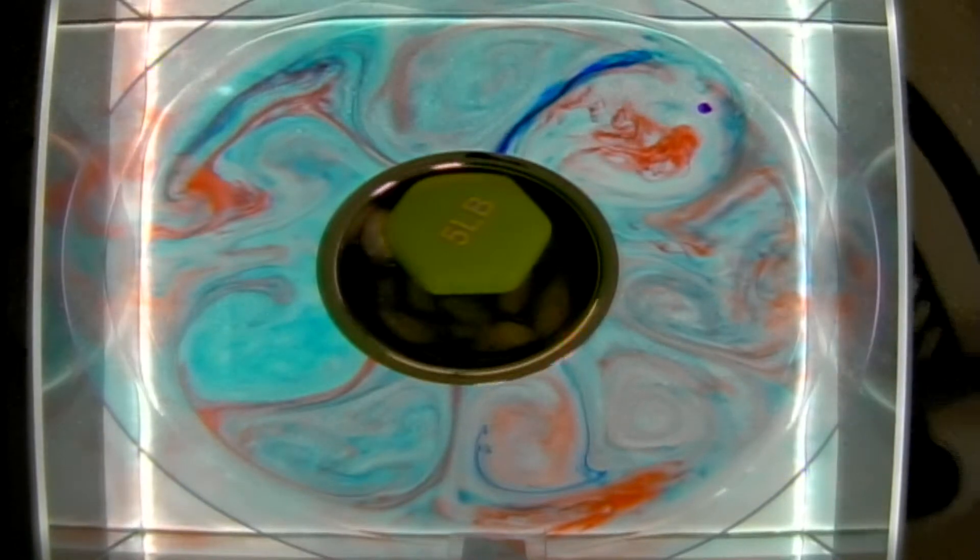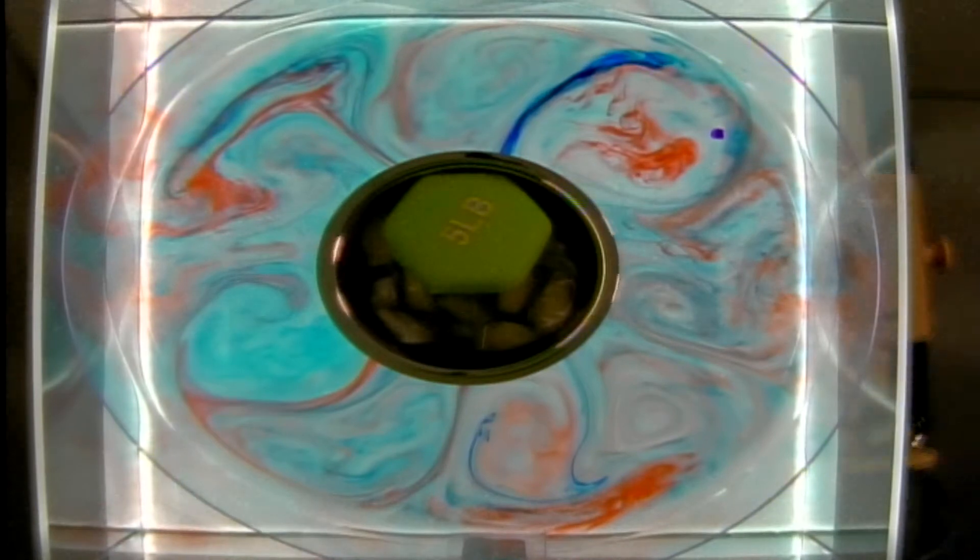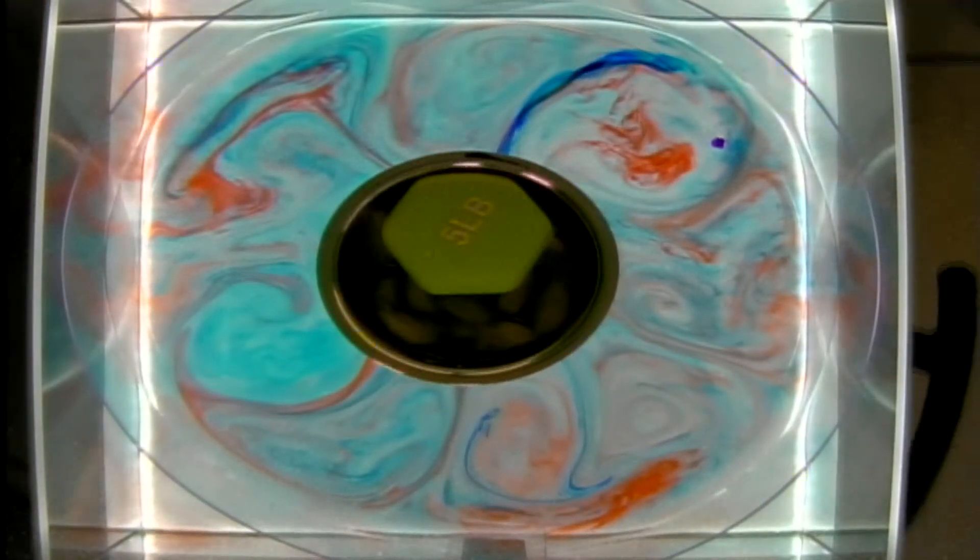So those are our two ingredients for creating weather in Earth's atmosphere: temperature gradients or differential heating and rotation.